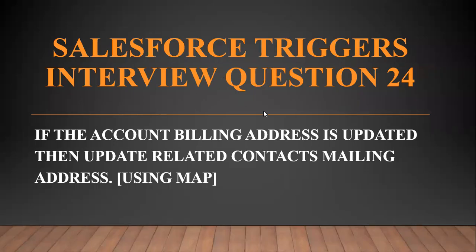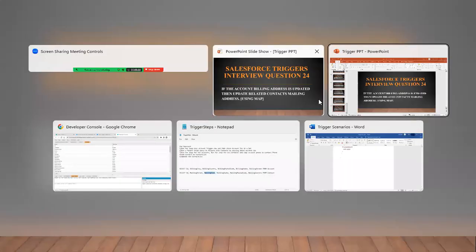Hi all, welcome to the Salesforce Ultimate Guide channel. In this video we are going to continue with our trigger scenarios — question number 24: if the account billing address is updated, then update the related contact's mailing address using a map. We have seen a similar scenario before, and we are going to do a similar trigger, but here we are copying the address of the account to the related contacts. We will start with our trigger.